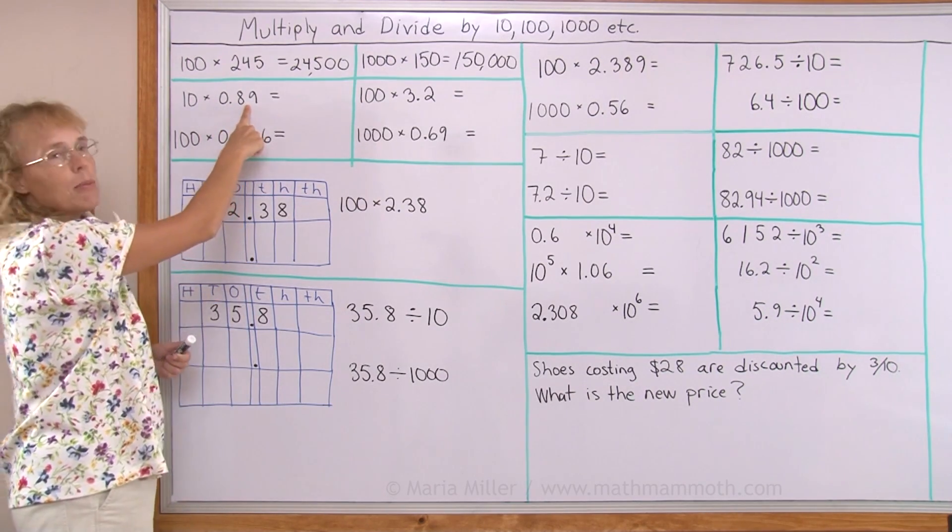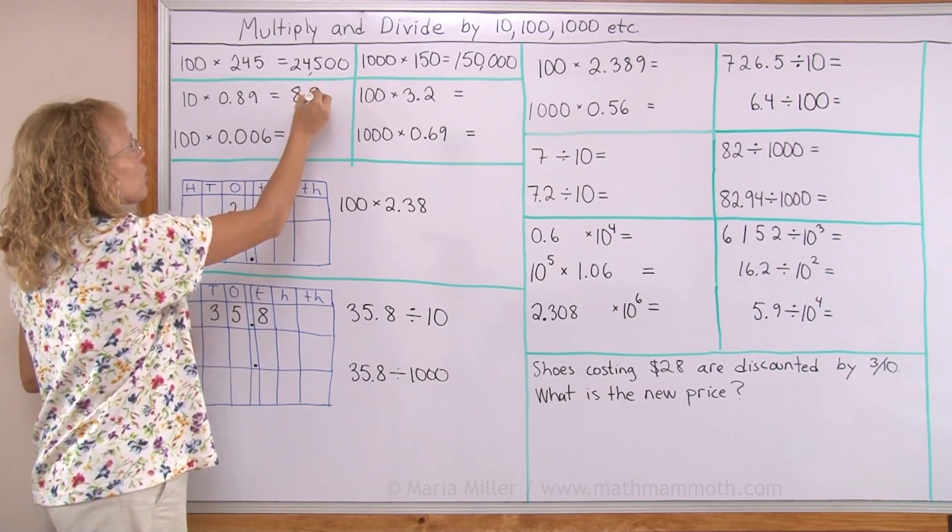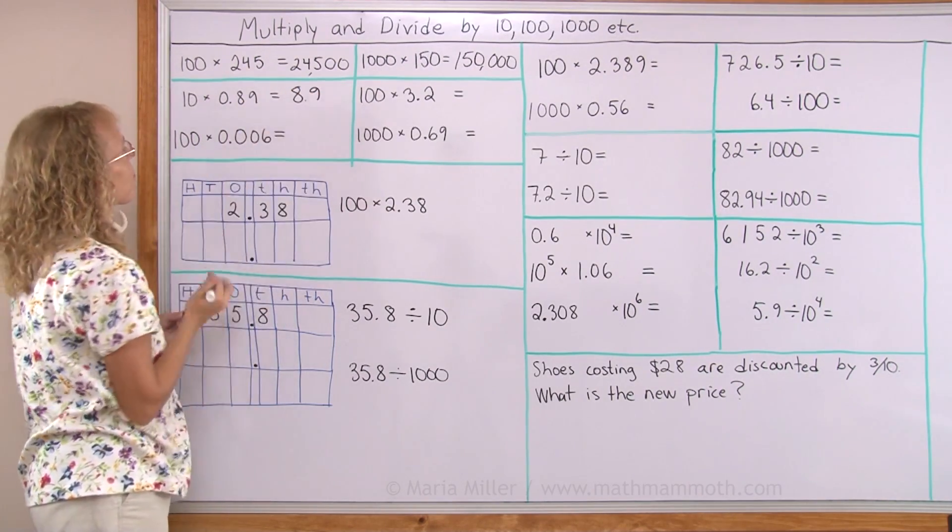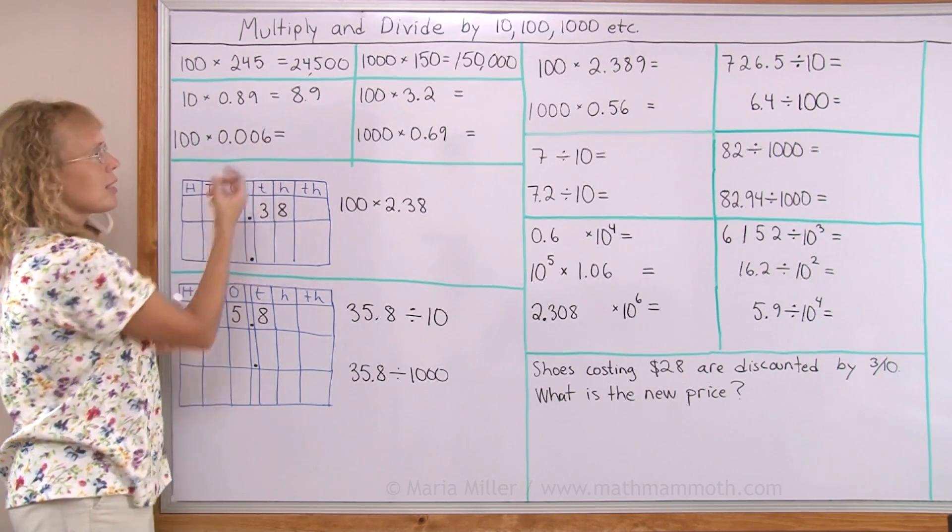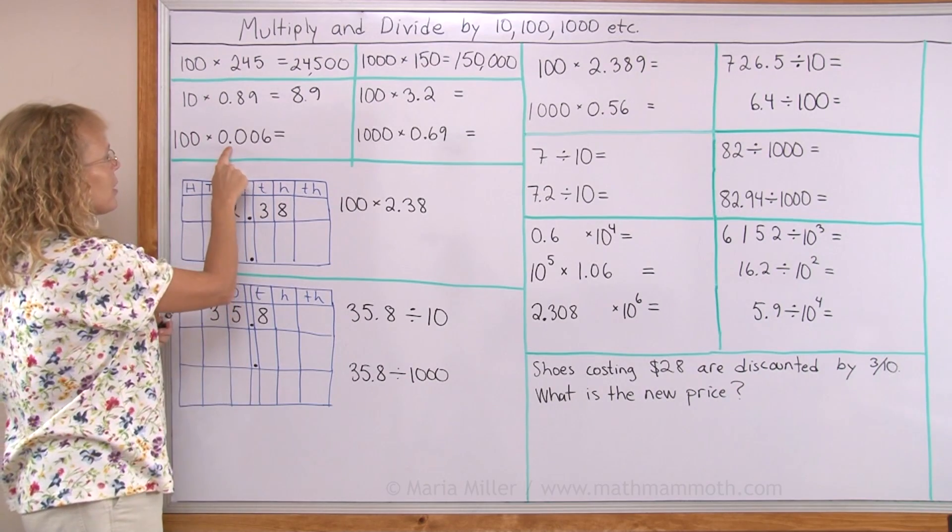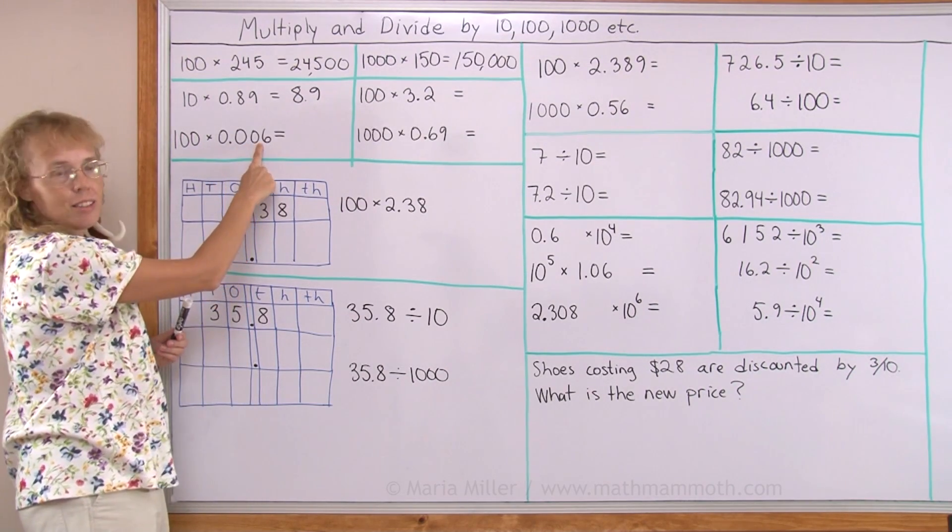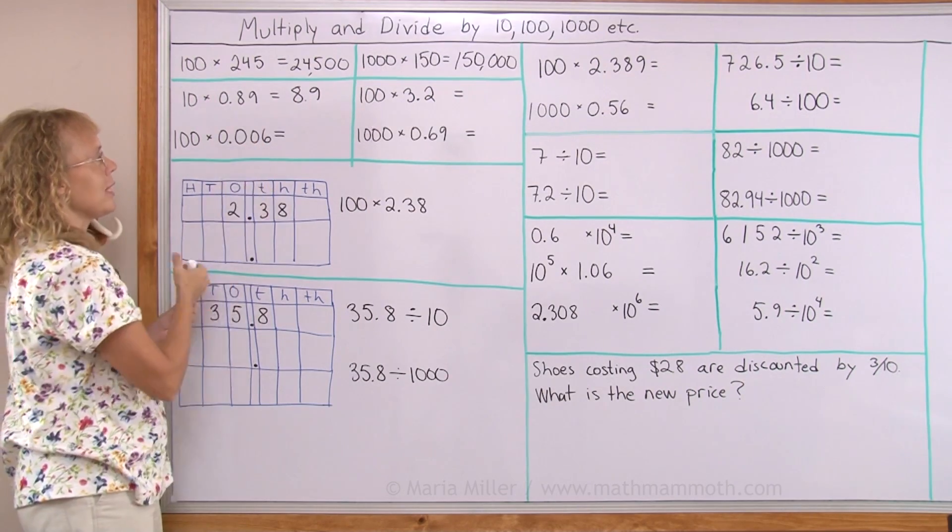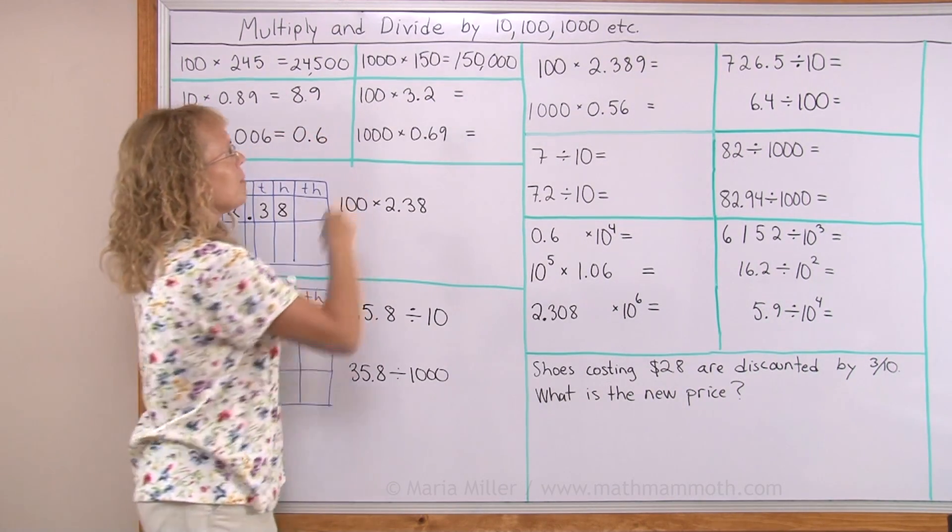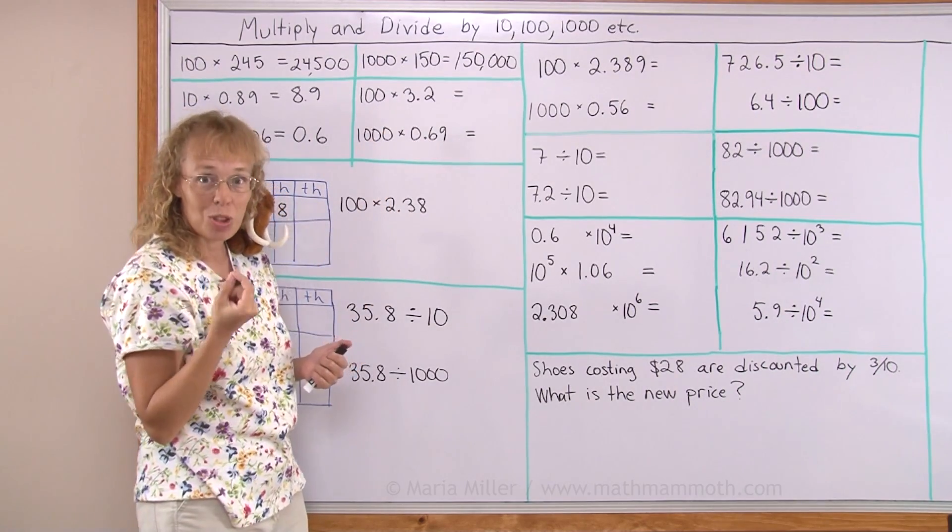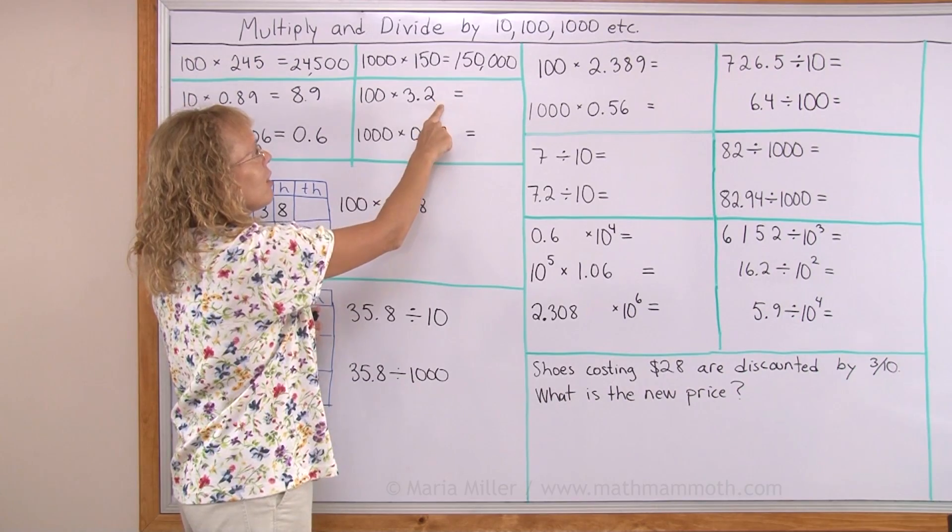If you move it one step, this number becomes 8.9. It became bigger. So you move it to the right. Over here, 100 times 6 thousandths, I move my decimal point two steps now, over here. So the number becomes 0.6, 6 tenths. Here, I will move my point two steps because there's two zeros here. Over here, and then another step.